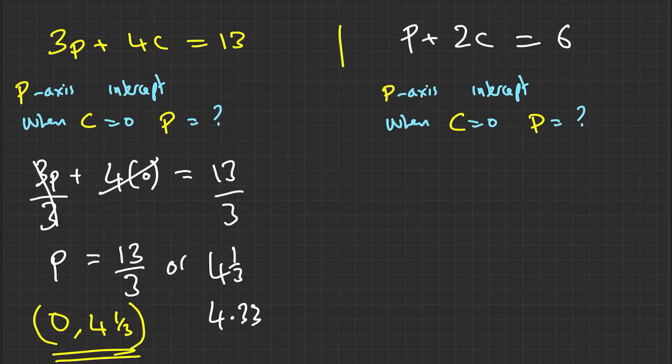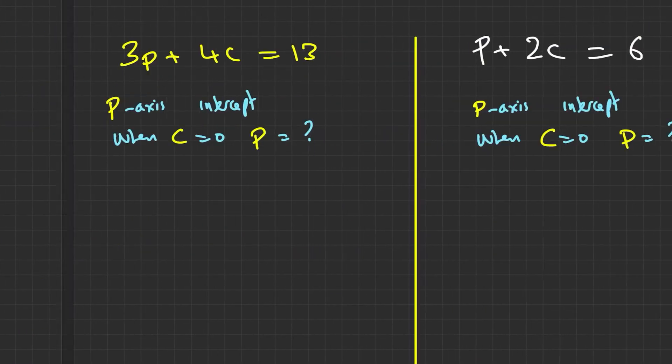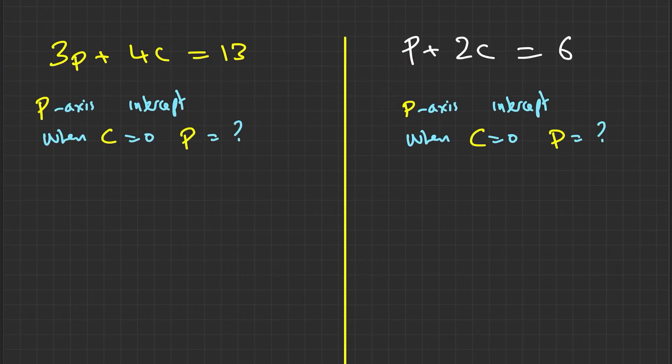Let's do the same thing for the second equation over here. Now, we've got when c is equal to 0, p plus 2 times 0 is equal to 6. This cancels out. That means p is equal to 6, which is going to be 0, 6. Now, all we need to do is work out the x-axis, or in other words, the c-axis intercept. When p is equal to 0, what is the value of c? Again, the c-axis intercept. When p is equal to 0, what is the value of c? So let's work this out then.